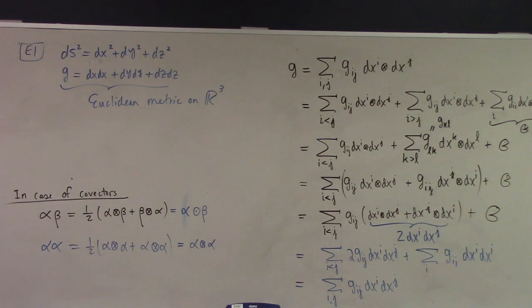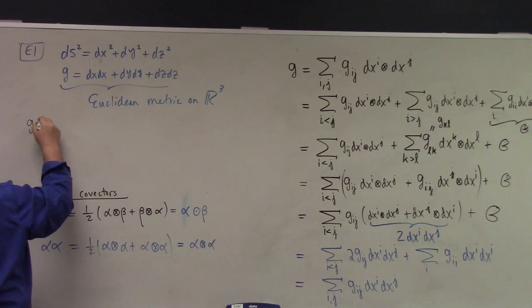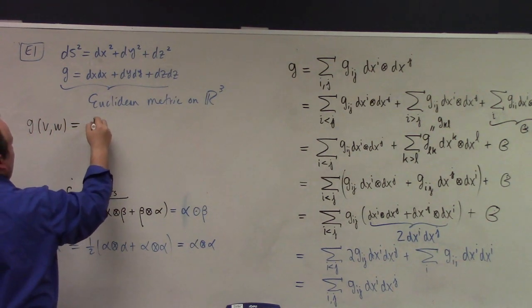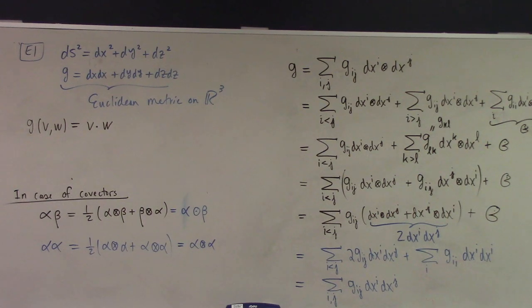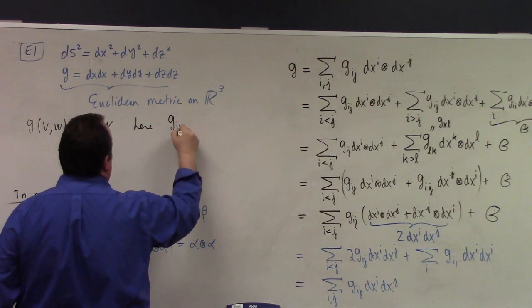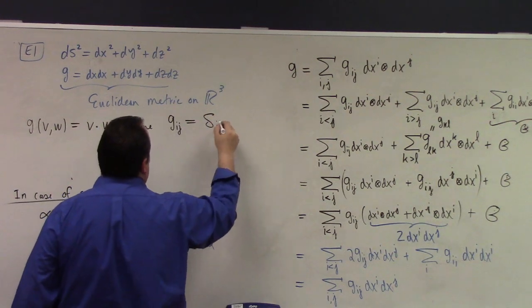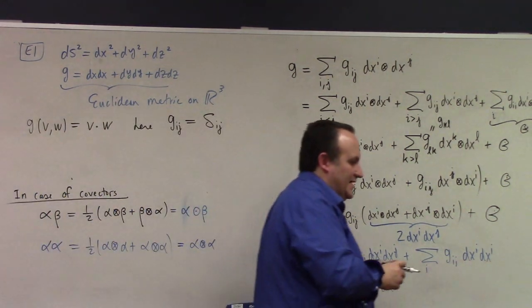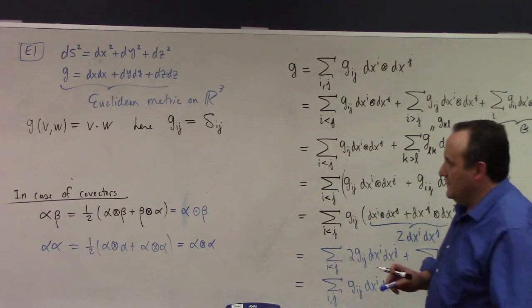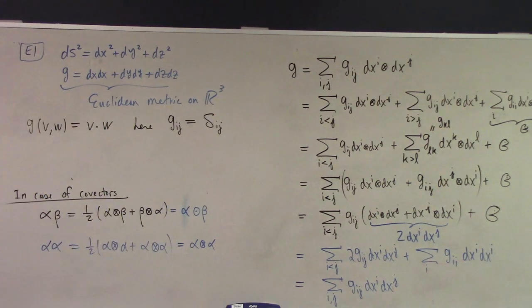When you actually put that into practice, how does it work? What happens when you feed that g, v and w? What do you get? You get v dot w. Right? That's what you get. And the matrix of the Euclidean metric is just the identity matrix. Right? G_ij is just equal to the Kronecker delta ij if we're using the usual Cartesian coordinate system at all.